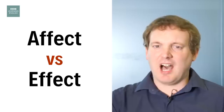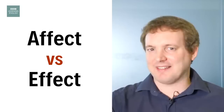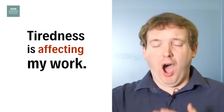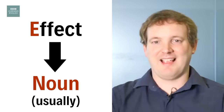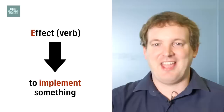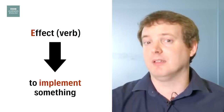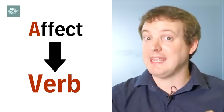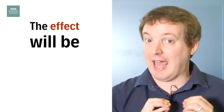Hi, I'm Phil from BBC Learning English. Today I'm going to tell you the difference between AFFECT with an A and EFFECT with an E. Just remember that AFFECT with an A is a verb — it means to influence. For example, tiredness is affecting my work. EFFECT with an E is usually a noun and it means the result of something: the effect of not having breakfast is to feel really hungry. 'Effect' can also be a verb — it's very formal and means to implement something: the management effected a new policy. So: AFFECT with an A is a verb and EFFECT with an E is usually a noun. And the effect will be — you don't make any more mistakes.